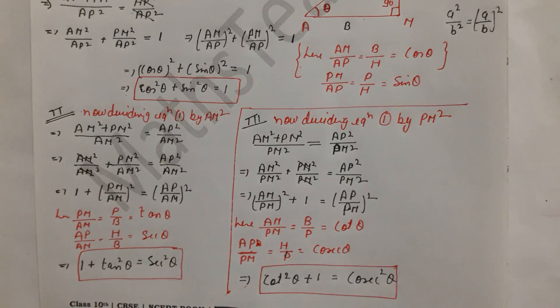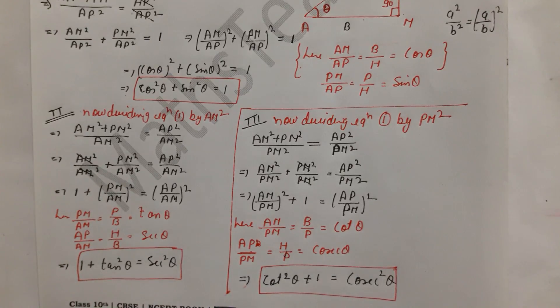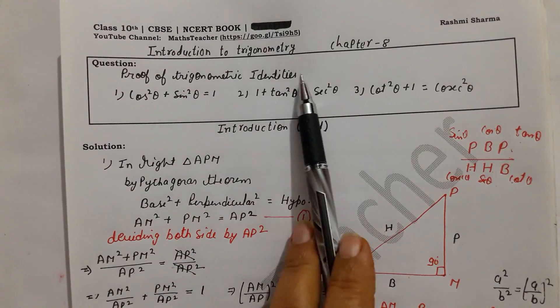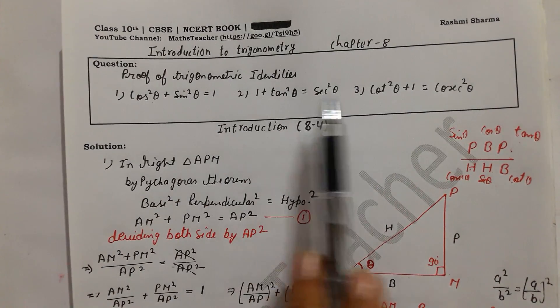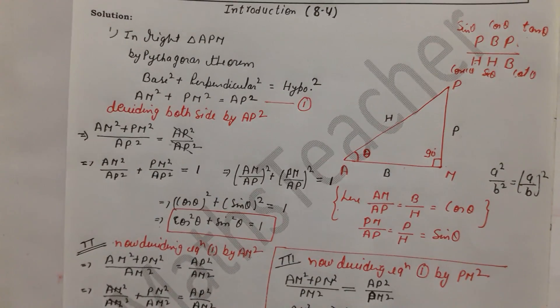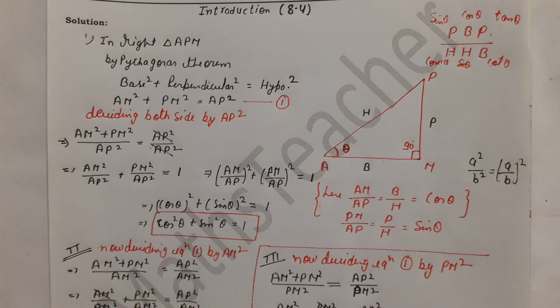So this is how to prove all three trigonometric identities. If you forget them in an exam, just draw a right triangle, apply Pythagoras theorem, and divide by each side. If there is any doubt, please comment below. Thank you.